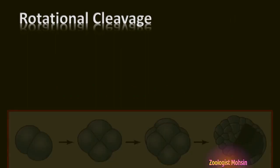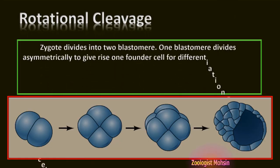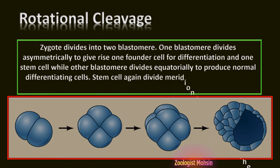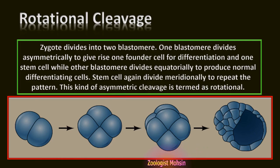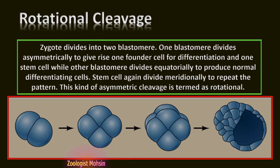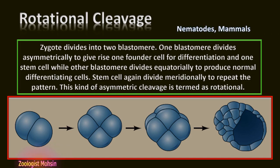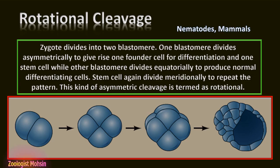Rotational cleavage: The zygote first divides into two blastomeres. One blastomere divides asymmetrically to give rise to one founder cell for differentiation and one stem cell, while the other blastomere divides equatorially to produce normal differentiating cells. Stem cells again divide meridionally to produce the same pattern. This asymmetric cleavage is the unique feature of some nematodes and all mammals, including humans — you also underwent rotational cleavage in your mother's womb.